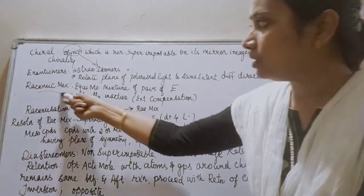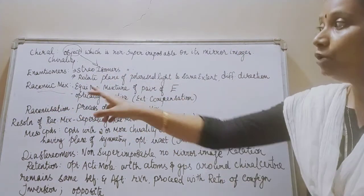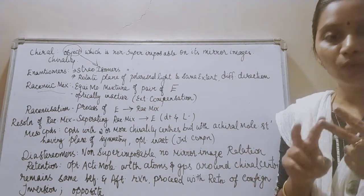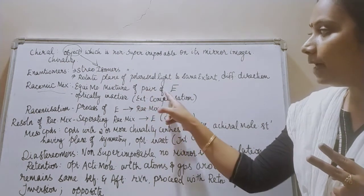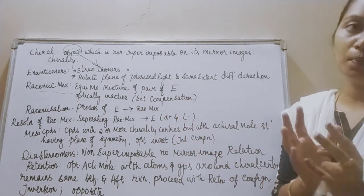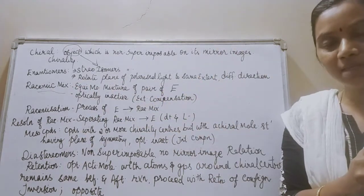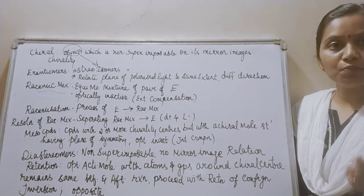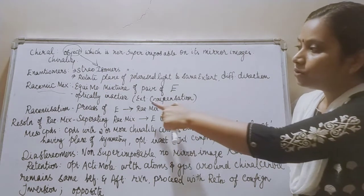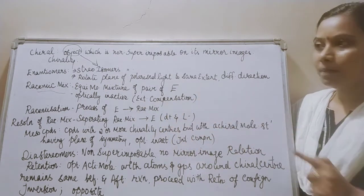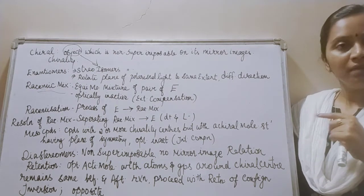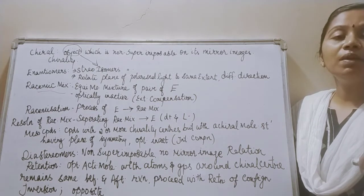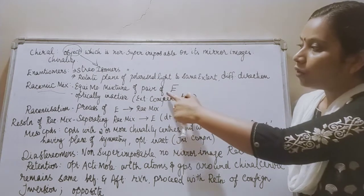What is a racemic mixture? An equimolar mixture of a pair of enantiomers is called a racemic mixture. When a pair of enantiomers are in equal proportion, I am going to call that mixture a racemic mixture. This racemic mixture is optically inactive because it has both positive rotation and negative rotation, compensated by external compensation — positive and negative cancel out — so they are optically inactive.